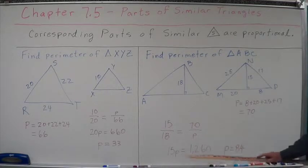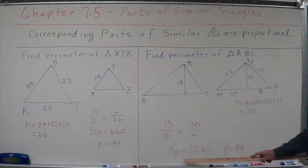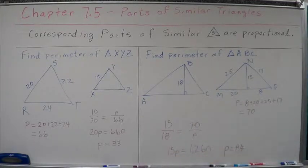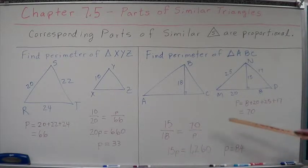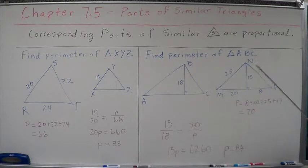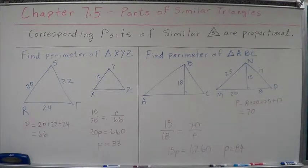During cross multiplication, 15P equals 1260. Do this multiplication. Now divide by 15, and we find out that the perimeter of this one would be equal to 84.